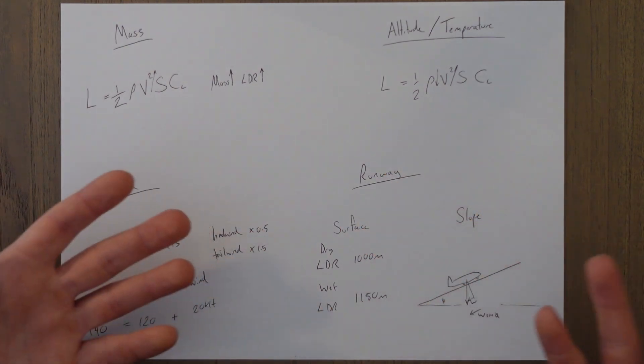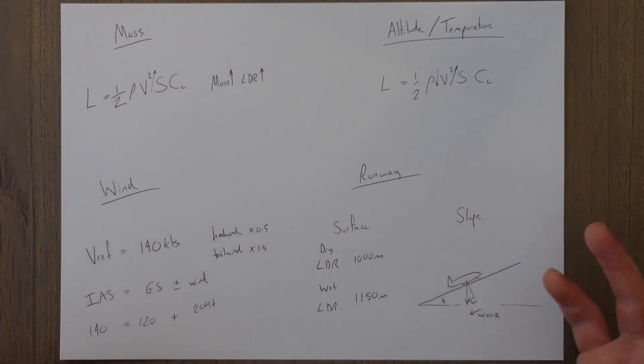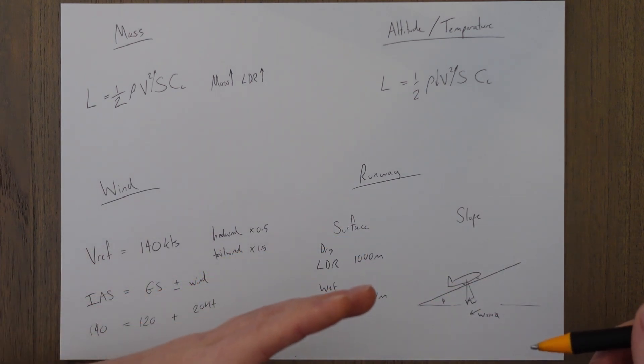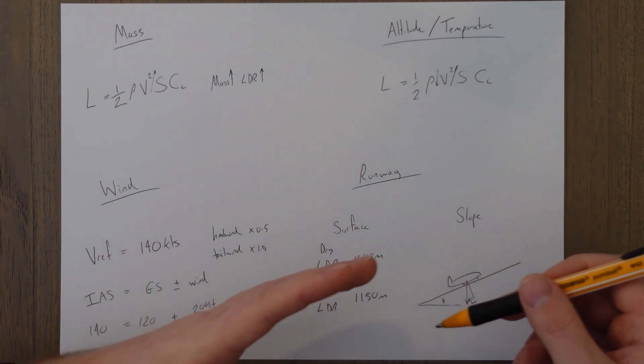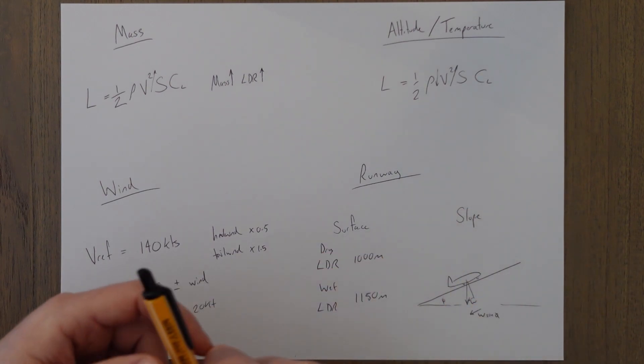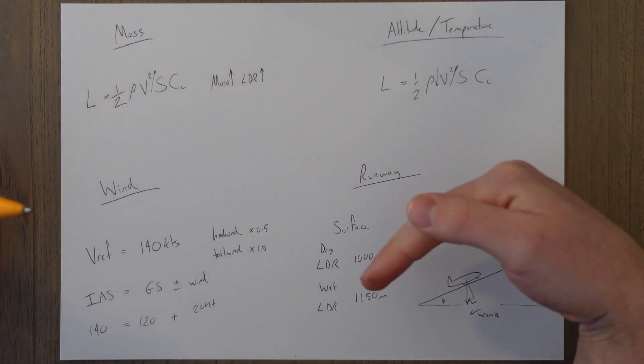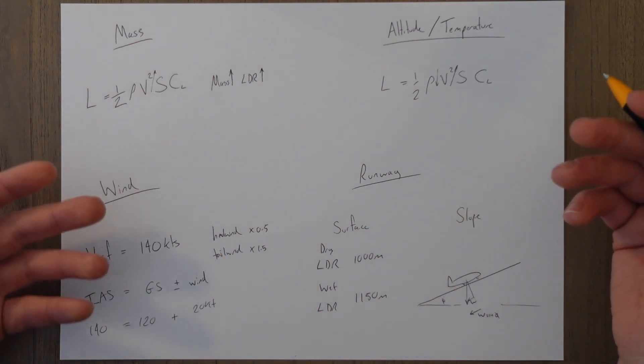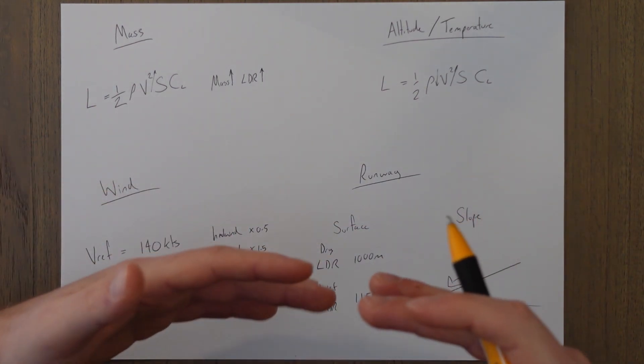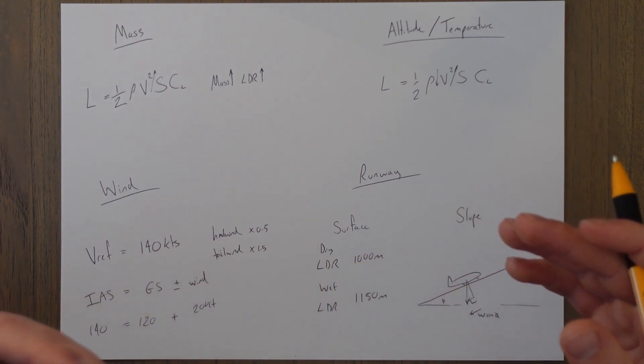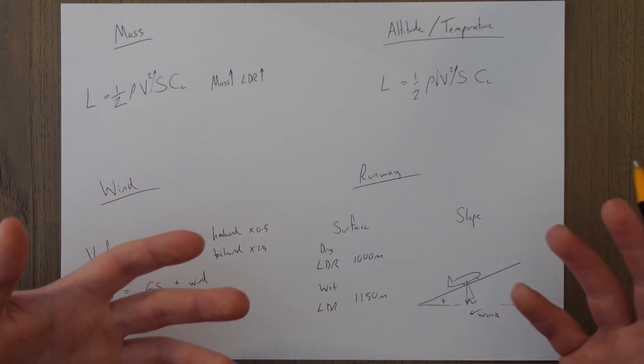So the slope of the runway is also important. If we land into an upsloping runway then some of the weight of the aircraft pulls us down the slope and helps with slowing down the aircraft. And if we were to land down the slope then the weight of the aircraft would pull us down the slope and make it harder for us to stop. The effect is usually quite small though because runways are pretty flat generally speaking and it's not like we're going to be landing into a 45 degree slope like this so the effect is pretty minor.